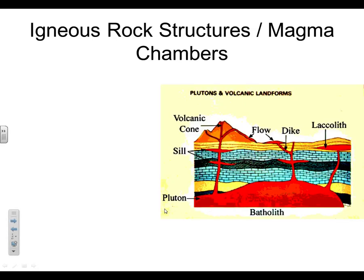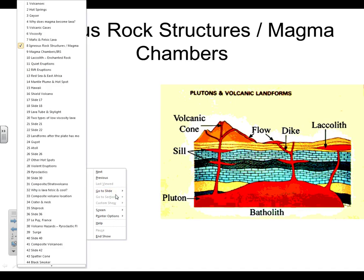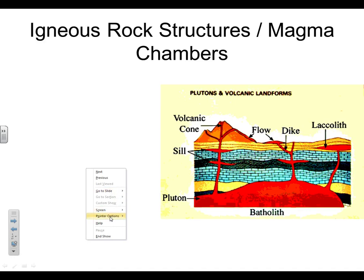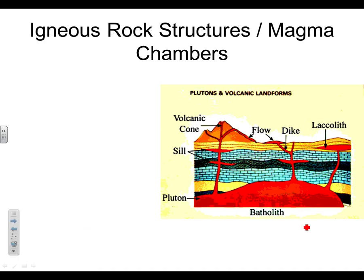Today we are talking about magma chambers and igneous rock structures. We are still doing our introduction to volcanoes, and we'll get down to our volcanoes next. Basically, the lava from the volcano needs to come from somewhere. Where does it come from? It comes from a magma chamber.